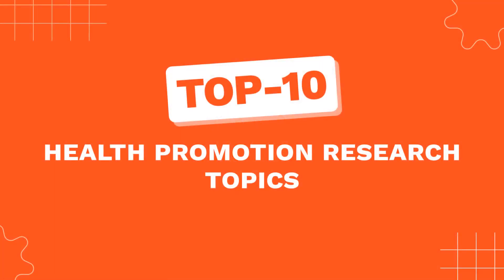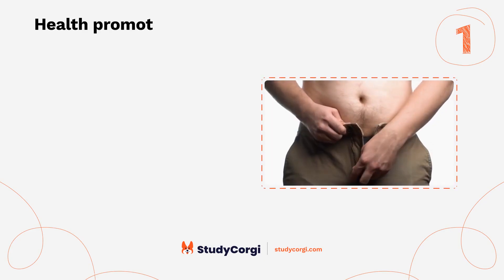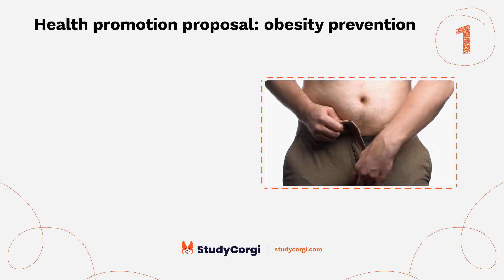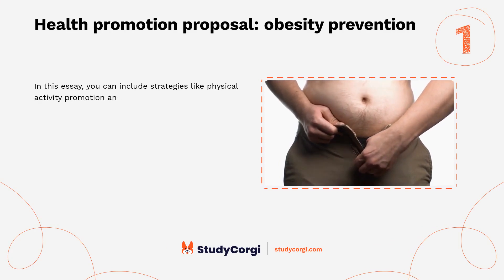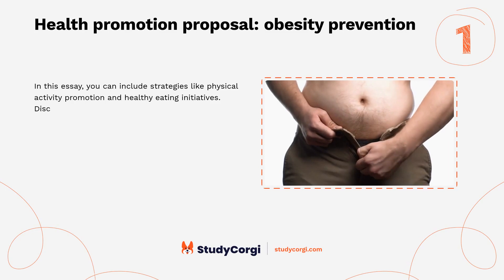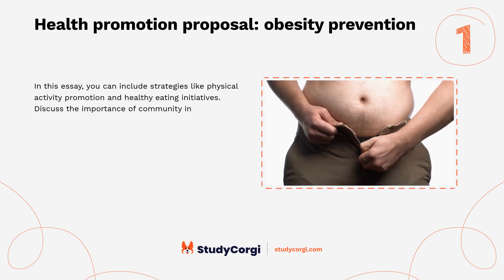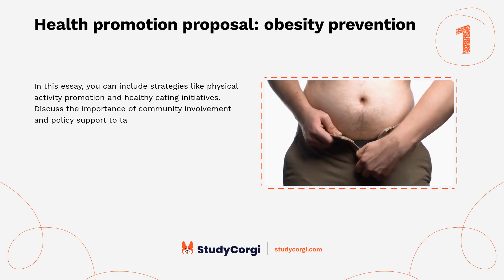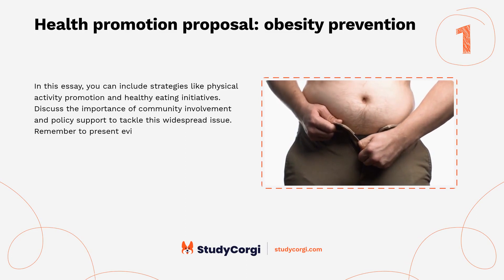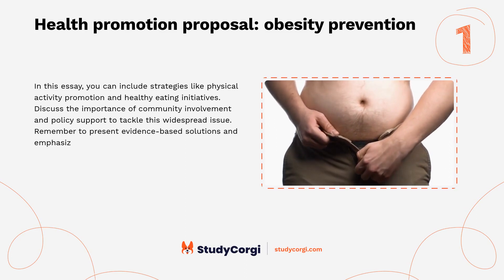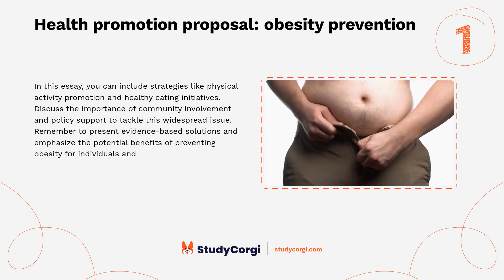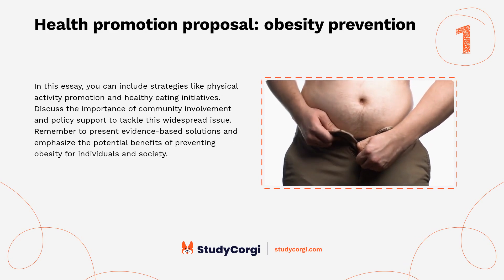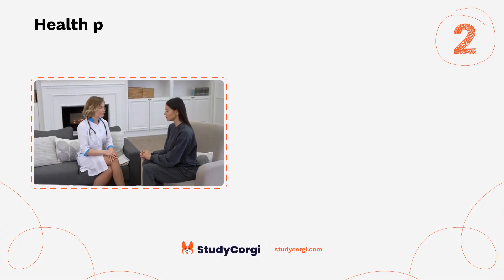Top 10 health promotion research topics. Health promotion proposal: obesity prevention. In this essay, you can include strategies like physical activity promotion and healthy eating initiatives. Discuss the importance of community involvement and policy support to tackle this widespread issue. Remember to present evidence-based solutions and emphasize the potential benefits of preventing obesity for individuals and society.